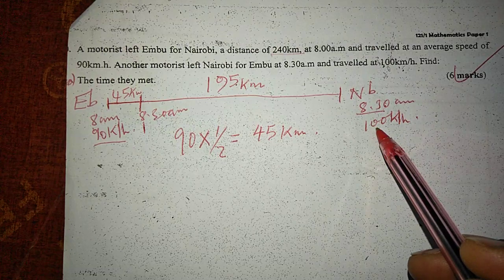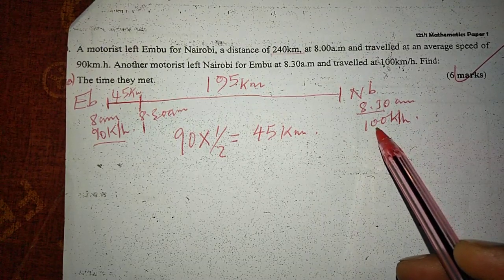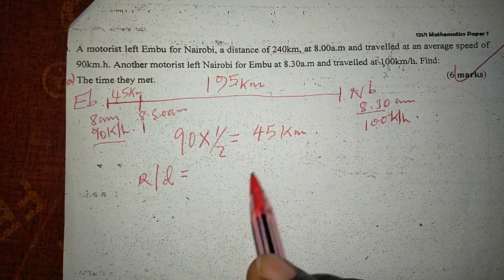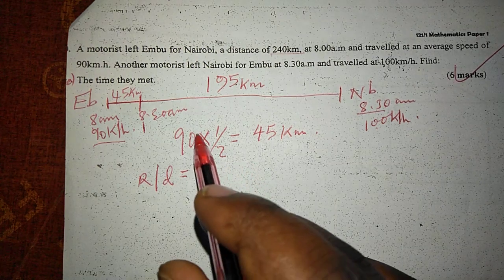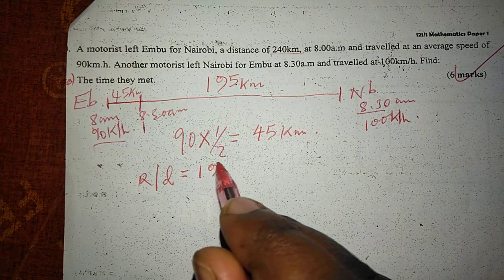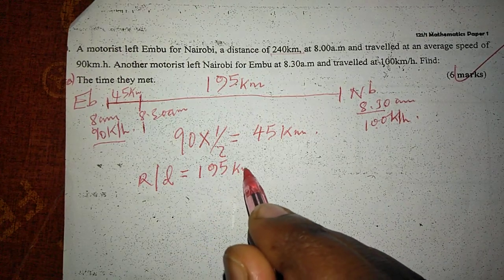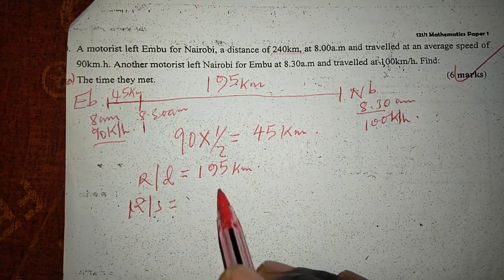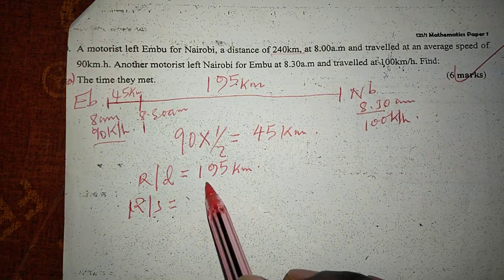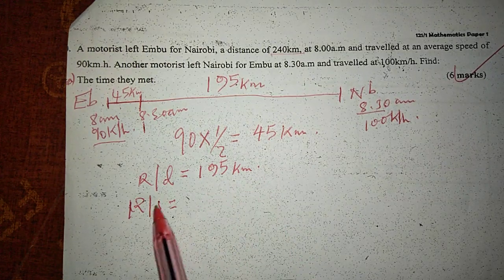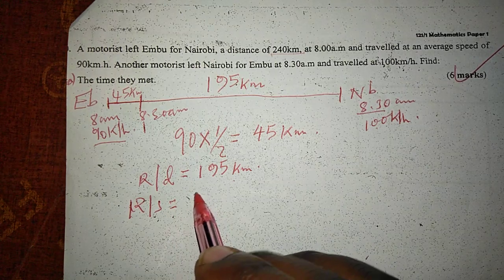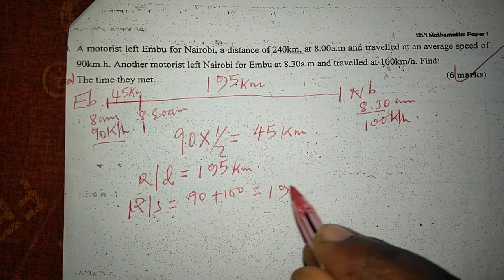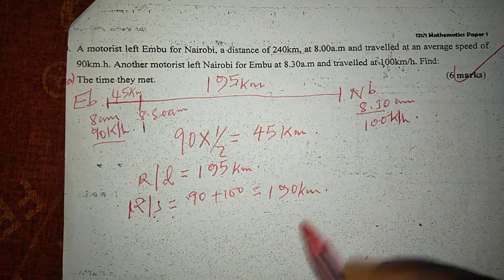The other motorist starts at 100 kilometers per hour at 8:30. So now we can get what we call relative distance and relative speed. Relative distance is the distance between the two motorists — 195 kilometers. Because they are approaching one another, the relative speed is the sum of their speeds: 90 plus 100, giving us 190 kilometers per hour.